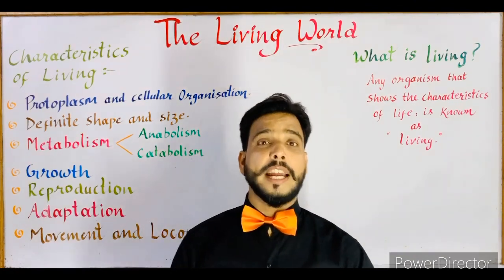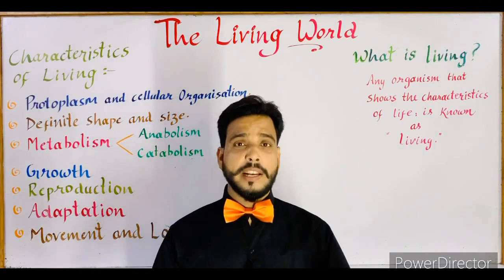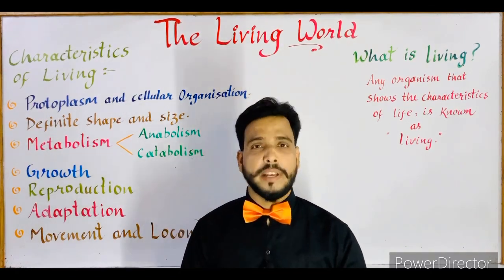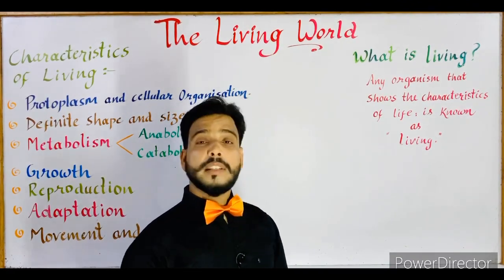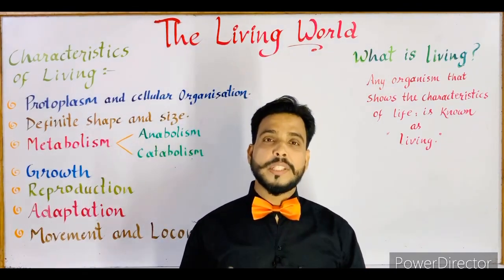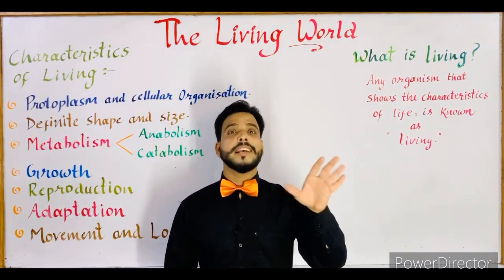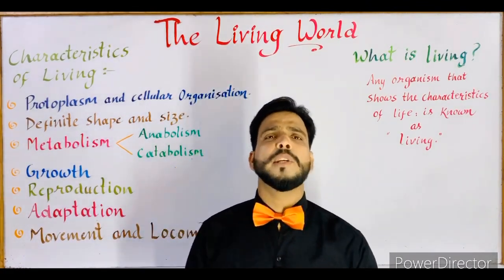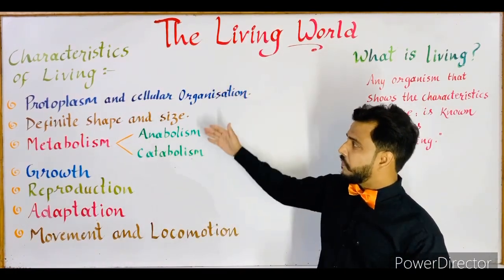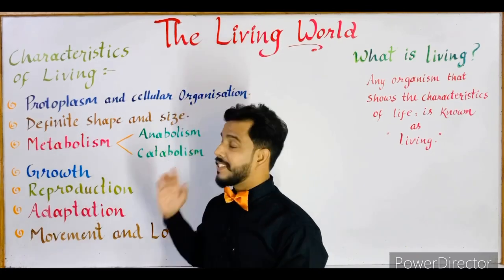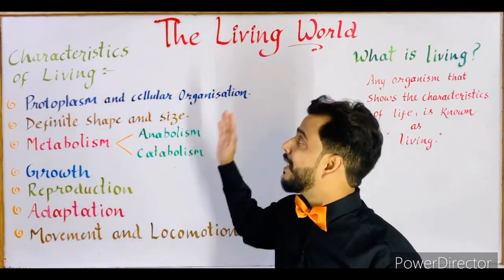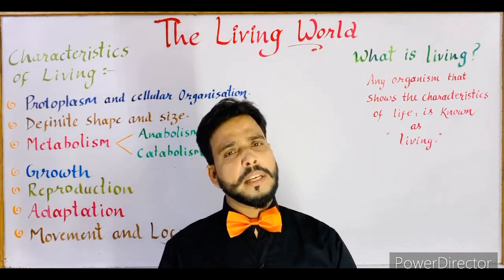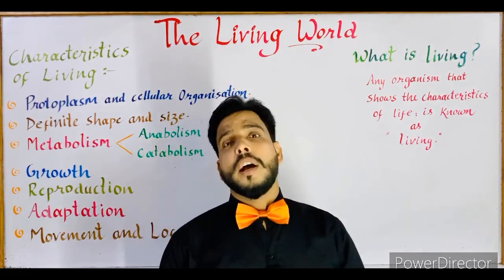The most important and first question in this chapter is: what is living? We all know that we are living beings, that plants are living, and that animals in our environment are also living. Any organism that shows the characteristics of life is known as living. If you are living, it means you have the characters of life. So human beings, plants, and other animals that show these characters of life are known as living.